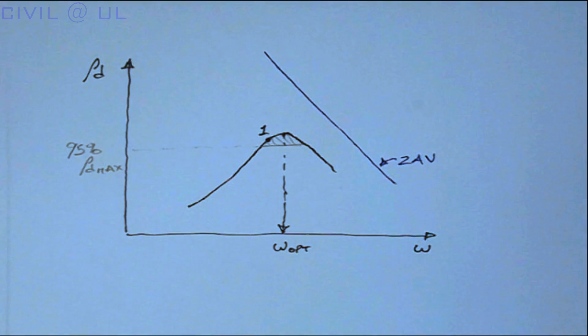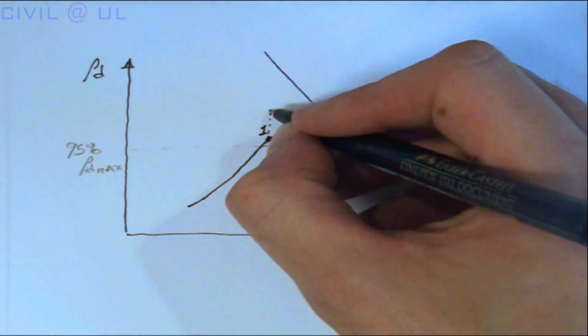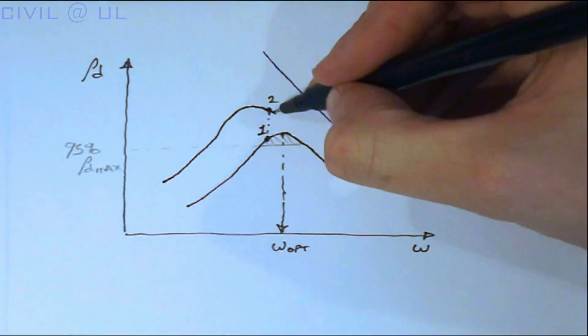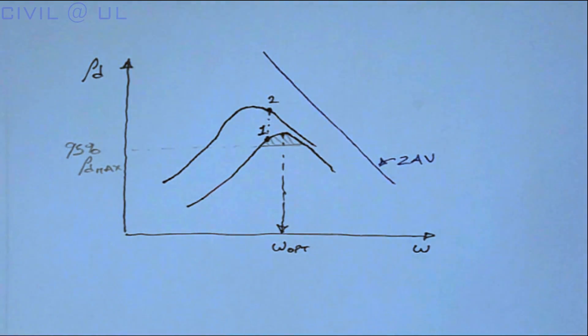If, however, the contractor continues to compact, the soil's dry density increases while the moisture content remains the same, as shown at point 2.